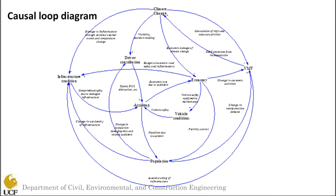The next loop is: infrastructure condition → accident rate → economy → VMT → infrastructure condition. Improving the condition of available infrastructure will result in fewer accidents and decrease the total economic burden of accidents. This increase in economic prosperity will result in increased travel demand, which will increase the VMT, and this increase in VMT will lead to greater infrastructure deterioration.